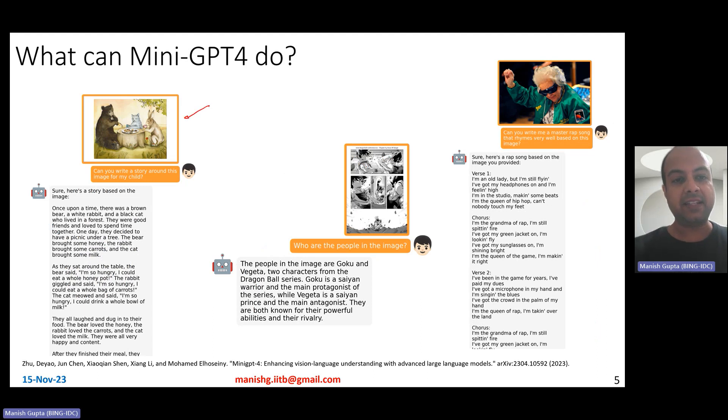More things? Well, it can actually take images and write a story about that. So imagine writing storybooks automatically. It can take comics and then it can actually tell you who these people are or it can take an image and come up with a master rock rap song, which sort of rhymes very well based on this image. And by the way, it does a very good job. It comes up with verses and nice structure to the rap song as well.